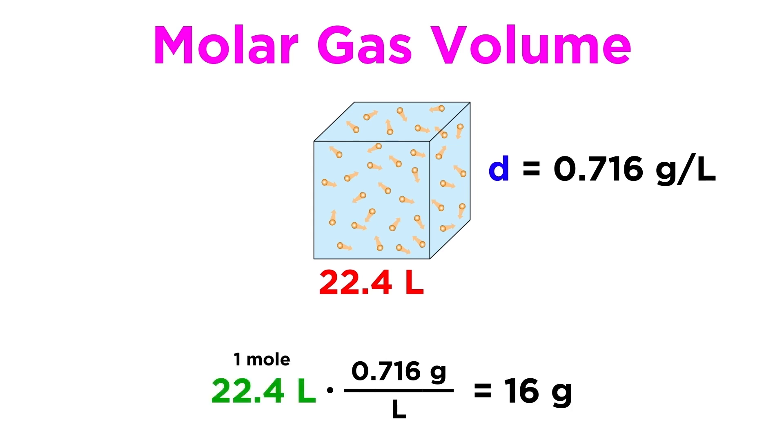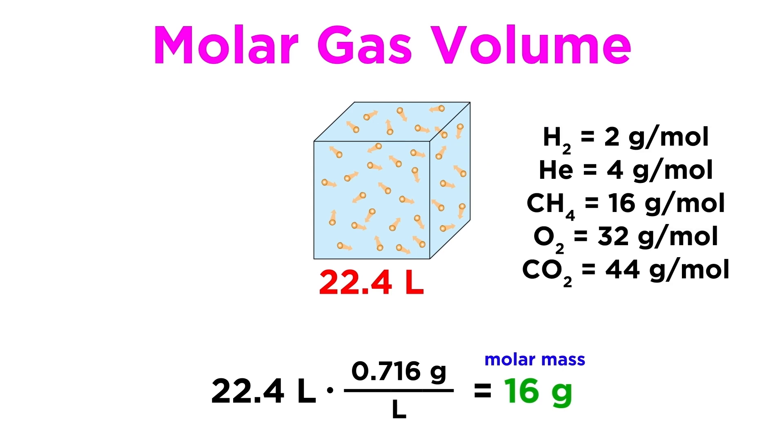We also know that one mole of any gas will occupy 22.4 liters, so for this particular gas, 16 grams must be equivalent to one mole. That means that the molar mass of this gas is 16 grams per mole. If we think about some common gases, like these ones listed here, we may find that methane is the only one that matches. It would be a good idea to do further experiments to be sure of this identification, but without a doubt calculating the molar mass of a substance dramatically narrows down the possibilities.